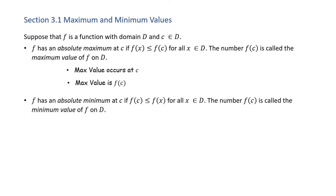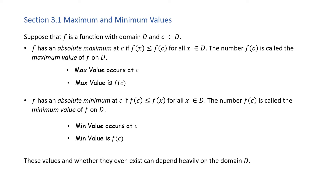f has an absolute minimum at c if f(c) is less than or equal to f(x) for all x in the domain D. The number f(c) is called the minimum value of f on D. The min value occurs at c, and the min value is the function evaluated at c. Important to note: these values, and whether they even exist, can depend heavily on the domain D.